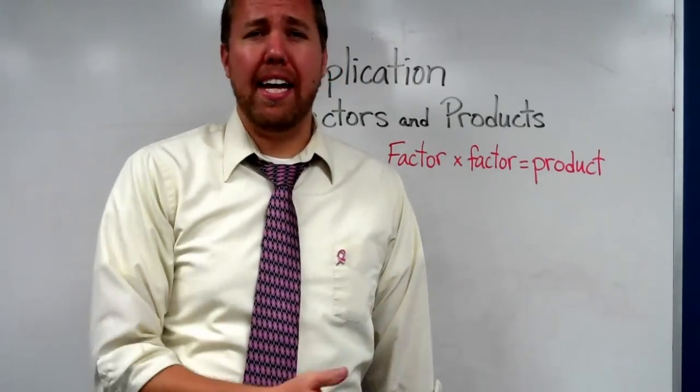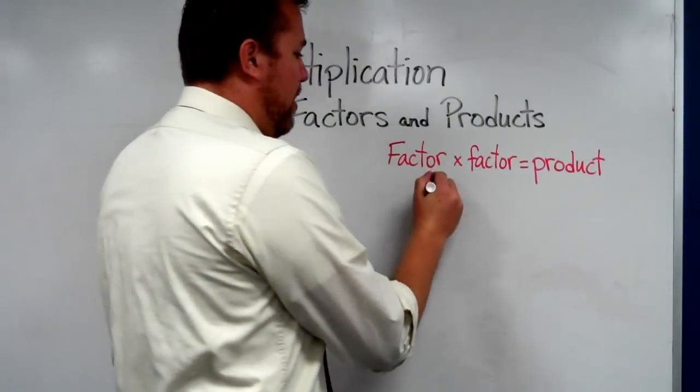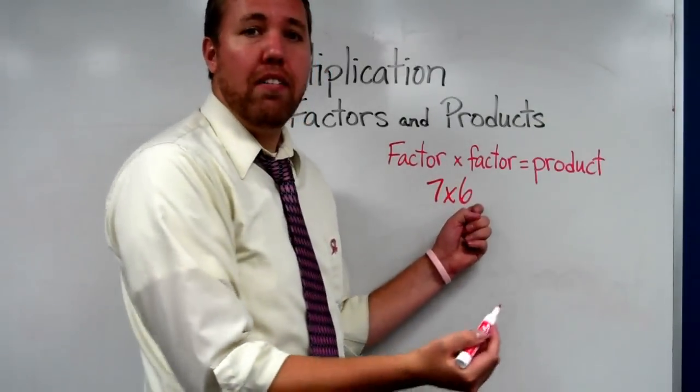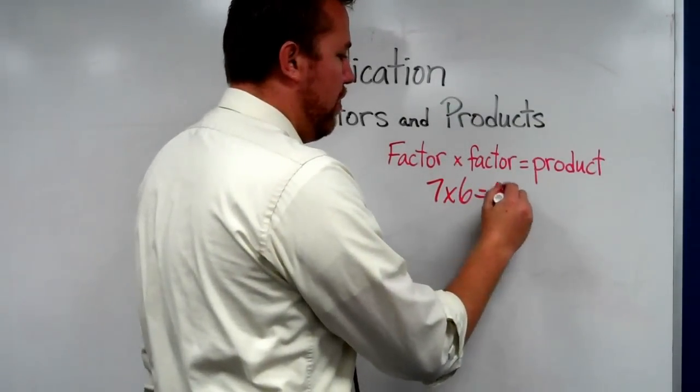So whenever we're looking at a multiplication problem, multiplication basic facts, 7 times 6, 7 and 6 are factors of 42.